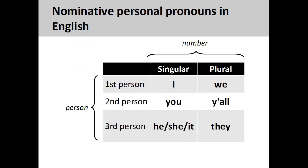The personal pronouns in English are: I, first person singular; you, second person singular; he, she, it, third person singular; we, first person plural; y'all, second person plural, a dialect form found in Southern American English; and they, third person plural.